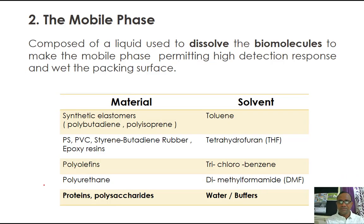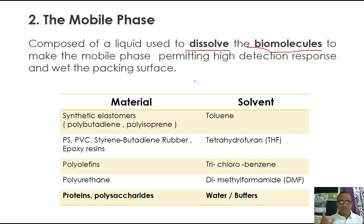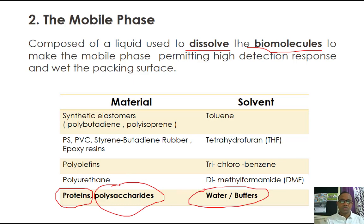The mobile phase is one of the key factors in the separation. It is a liquid solvent that dissolves your biomolecules so they can partition between the stationary phase and the mobile phase. The solubility of the molecule in the mobile phase determines the separation efficiency. The mobile phase dissolves the biomolecules and helps move the sample across and through the column. We use different solvent systems for different sample types — mostly water or various buffer systems when working with proteins and polysaccharides.